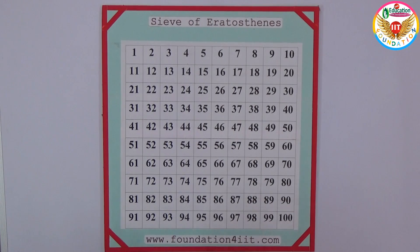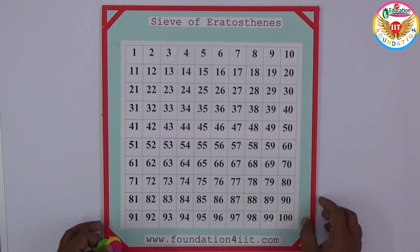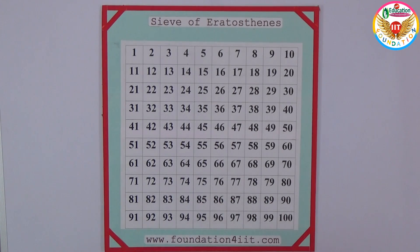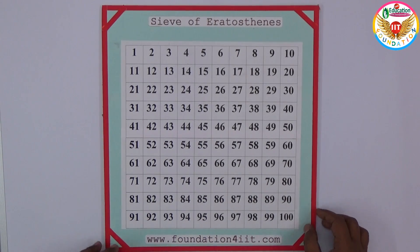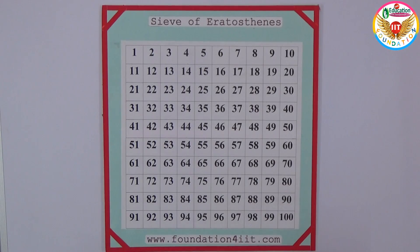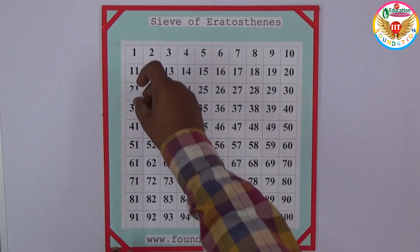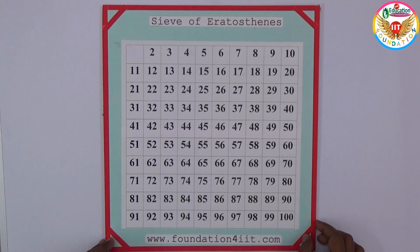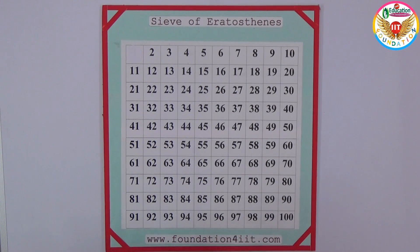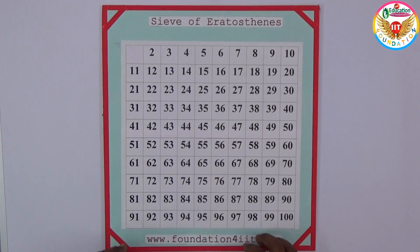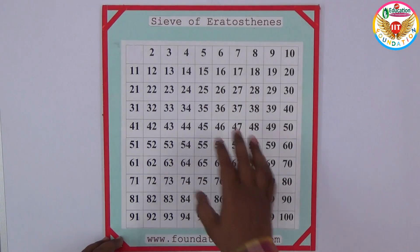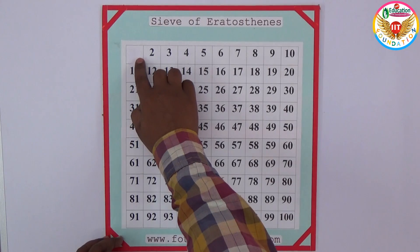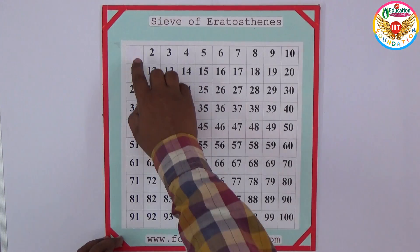A prime number has no factors except 1 and itself — that definition will apply in this project. First of all, 1 itself is not a prime and not a composite. Numbers which are not prime numbers are composite numbers. We need to find the prime numbers from 1 to 100, and since 1 is not prime and not composite, we can close this.